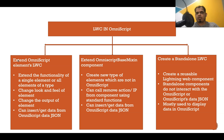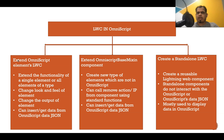If you want that type of functionality, you can extend the OmniScript base mixin component. The third way is to create a standalone LWC component. The standalone component is basically an LWC component you may already be using anywhere — maybe outside of OmniScript, inside a Lightning app, on a community page, or anywhere. You can then use that same component on the OmniScript as well. The only problem with a standalone LWC component is that it cannot interact with the OmniScript JSON — it cannot get data from the OmniScript JSON or manipulate it.